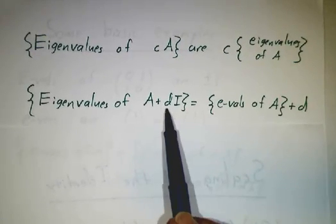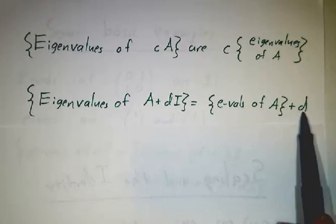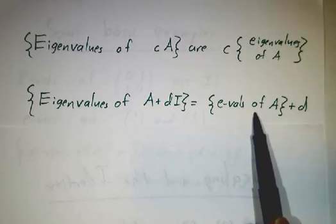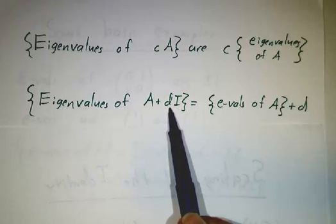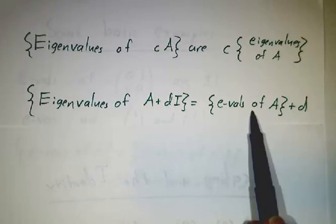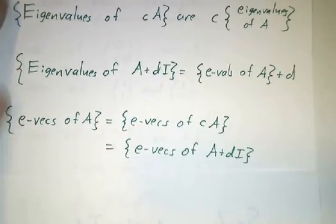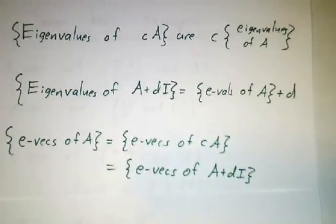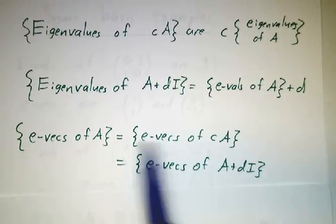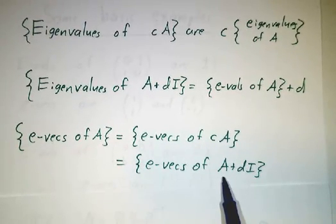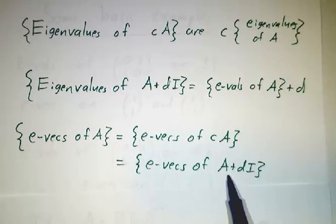If you add a multiple of the identity to a matrix, you just add that number to all the eigenvalues. If you add 5 times the identity to the matrix, you add 5 to all the eigenvalues. And as for the eigenvectors, they don't change. If you scale a matrix or if you add a multiple of the identity, the eigenvalues are exactly what they were before.